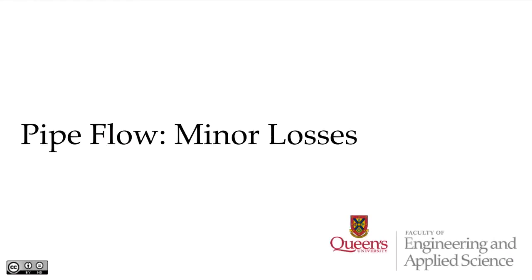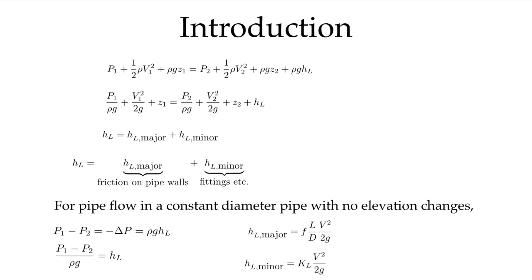In this video, we're going to look at pipe flow with minor losses. Writing our Bernoulli equation from station 1 to station 2, and adding the loss term due to both major losses (friction in the pipe) and minor losses due to fittings, we find that HL due to major losses uses the friction factor expression, while HL minor is a loss coefficient K times V squared over 2g.